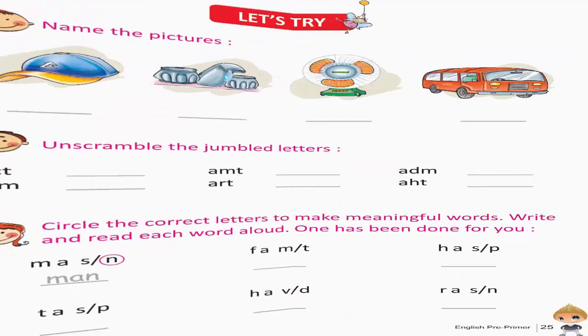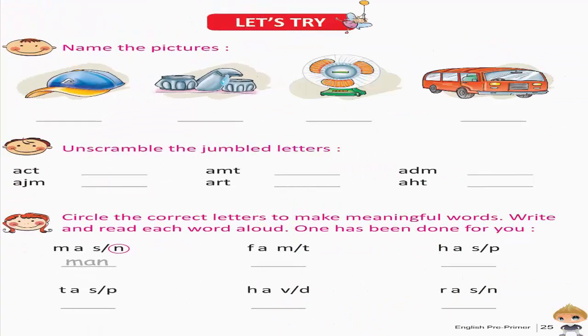Let's try: Name the pictures. Unscramble the jumbled letters. Circle the correct letters to make meaningful words. Write and read each word aloud. One has been done for you.